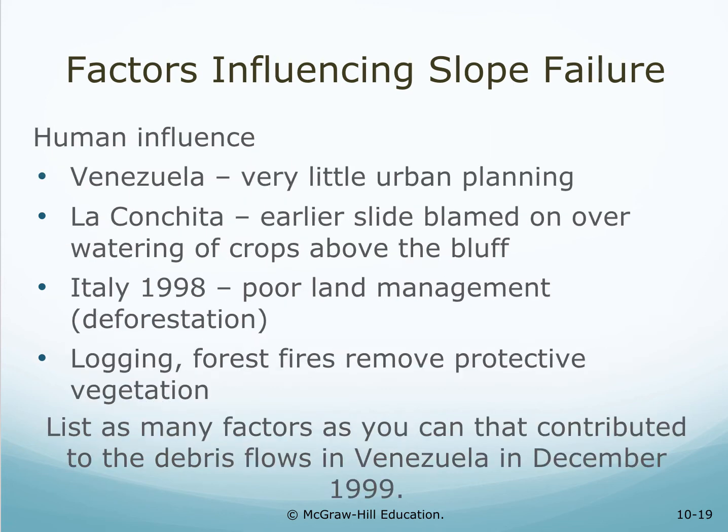Human influence played a major role. In Venezuela, there was very little urban planning. In La Conchita, the earlier slide was blamed on overwatering of crops above the bluff. In Italy in 1998, it was blamed on poor land management and deforestation. Look at Bangladesh — deforestation has contributed to continual flooding. Logging and forest fires remove protective vegetation. List as many factors as you can that contributed to the debris flow in Venezuela in December of 1999.